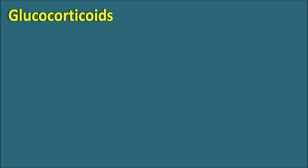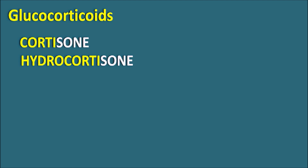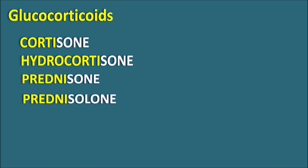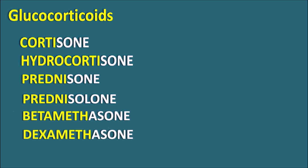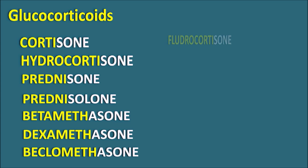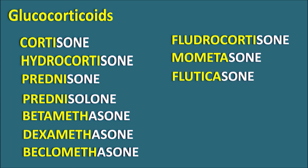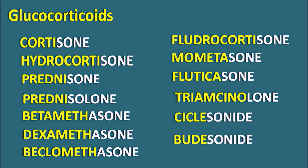The natural glucocorticoids are cortisone and hydrocortisone. Apart from these, we have many types of glucocorticoids — for example, prednisone, prednisolone, all ending with the suffix '-sone' or '-solone'. Similarly, betamethasone, dexamethasone, beclomethasone, and fludrocortisone, which has some mineralocorticoid activity. Mometasone and fluticasone are somewhat selective towards the respiratory system. Triamcinolone and a few others also end with '-sone', like ciclesonide and budesonide. All these act as anti-inflammatory agents and immunosuppressants.